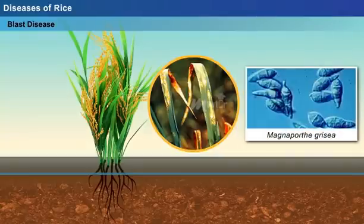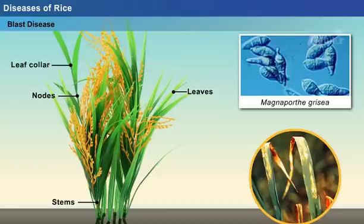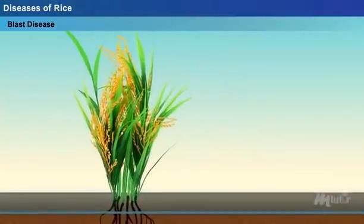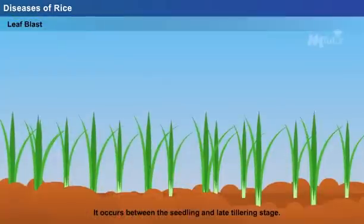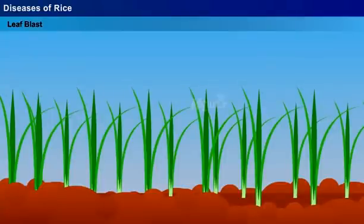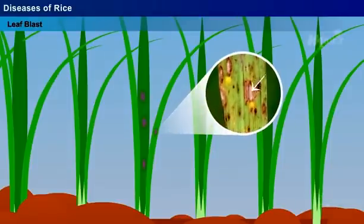The fungus infects the plant and produces lesions on all parts including leaves, leaf collar, nodes, stem, panicle, and grains. Usually the leaf sheath and the roots are left unaffected. Based on the location of infection, the disease is described as leaf blast. It occurs between the seedling and late tillering stage. When the fungus attacks a young leaf, purple spots are formed initially. Later, the spots emerge into a spindle shape with grey or white centre surrounded by purple to brown coloured borders.